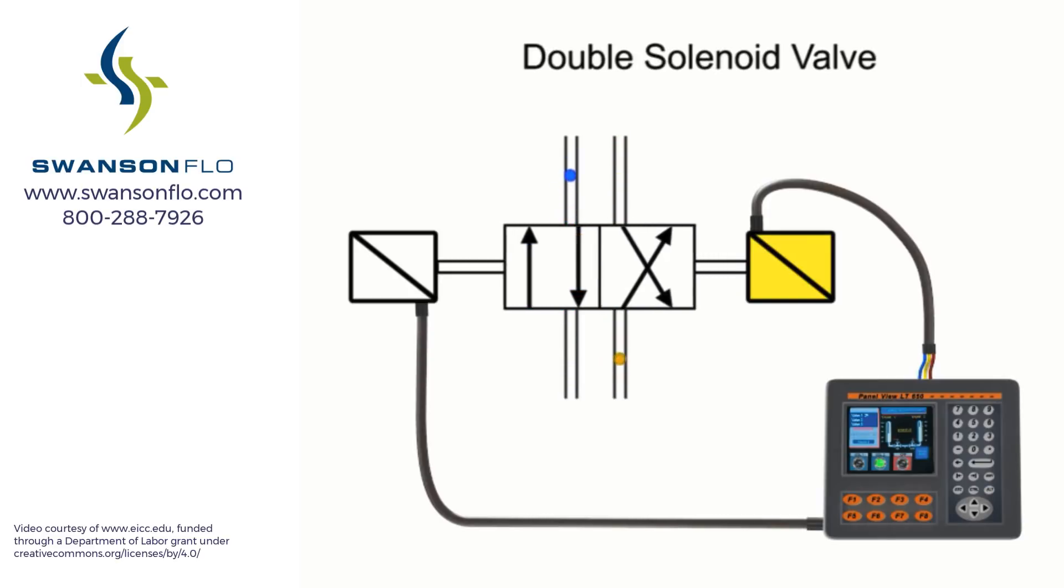Energizing the second solenoid will send the valve to the second position. Even if the second solenoid is de-energized, the valve will remain shifted until the first solenoid is re-energized.